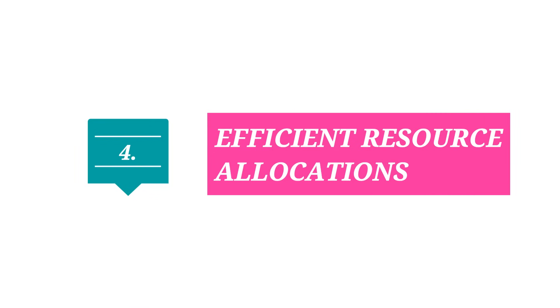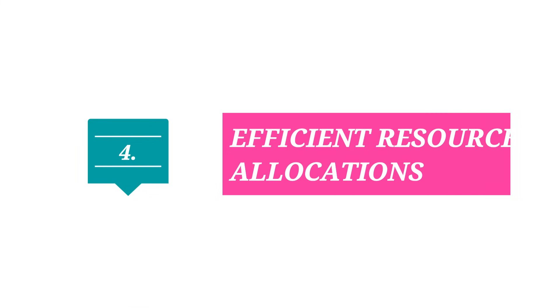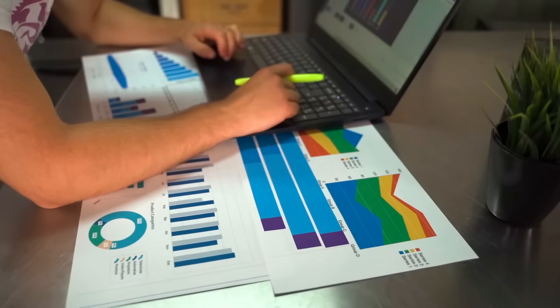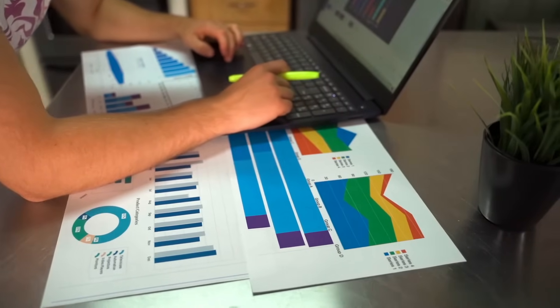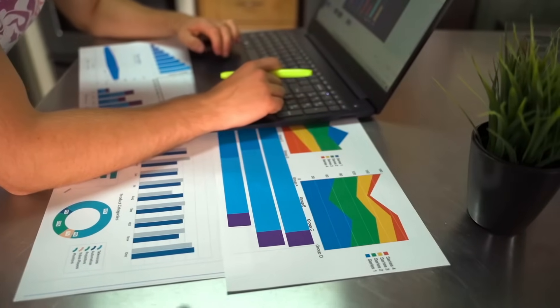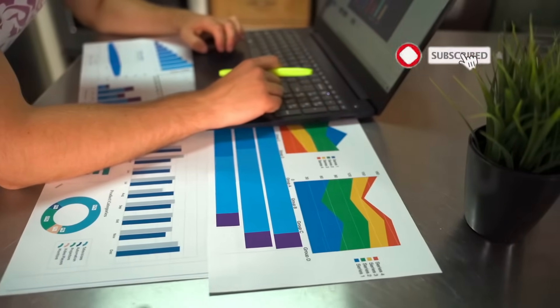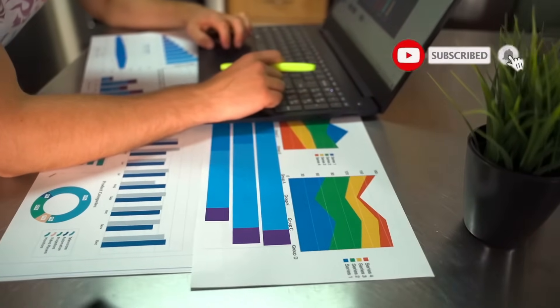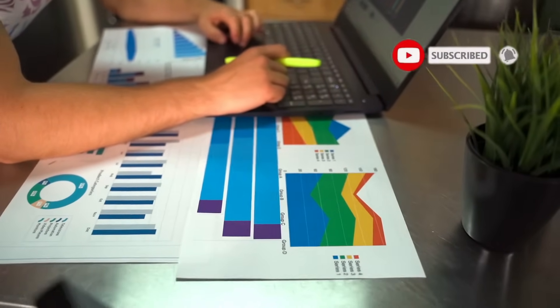Number four, efficient resource allocation. Once you understand where your customer is and what the customer is looking for, you will be able to allocate your marketing resources better.